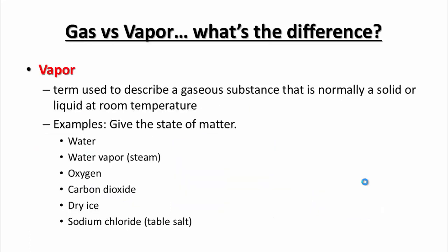A couple more things: gas and vapor — what's the difference? Vapor is a term often used by meteorologists, and it describes a substance that is gaseous but is normally in the solid or liquid state at room temperature. Water at room temperature is typically a liquid, but it does have the ability to evaporate into the gas phase — and now we call that gas a vapor. Vapor is used for things that are typically not gas at room temperature.